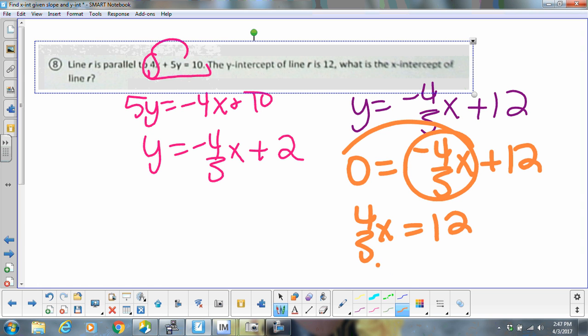So we're going to multiply by 5. So 4x is going to equal 60. And x is going to equal 15, giving us the ordered pair (15, 0).